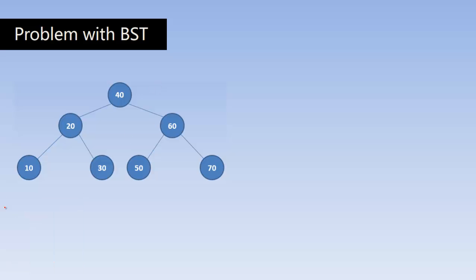If I want to search for element 30, first I will compare with the root. 30 is less than the root, so I go here, ignoring almost half the tree — that is the first comparison. Now I compare 30 with 20; 30 is more than 20, so I go to the right. That is the second comparison. Then I compare 30 with 30 — my element is found. That is the third comparison.